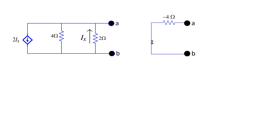Of course, a real resistor cannot supply power. In this circuit, it's actually the dependent source that ends up supplying power. This circuit is an example of how a dependent source and resistor can be used to simulate a negative resistance value.